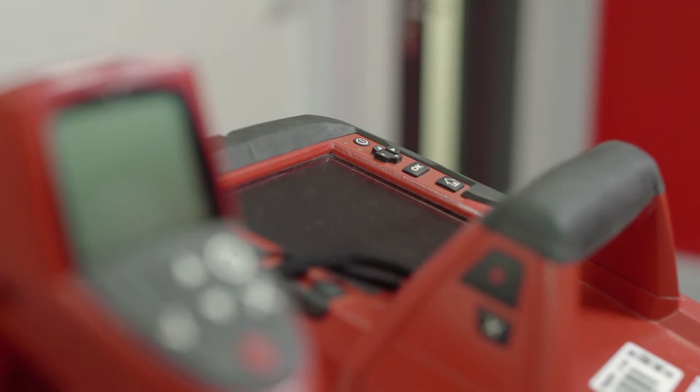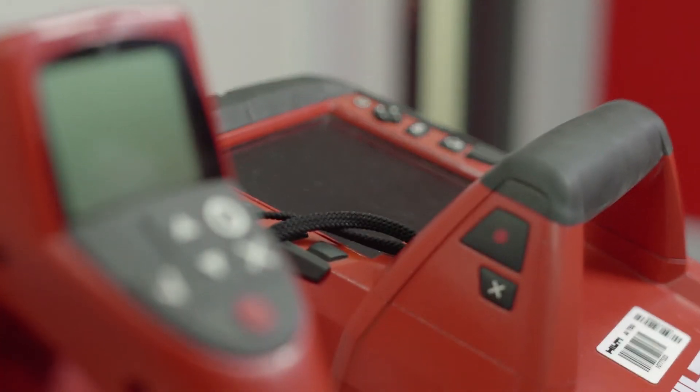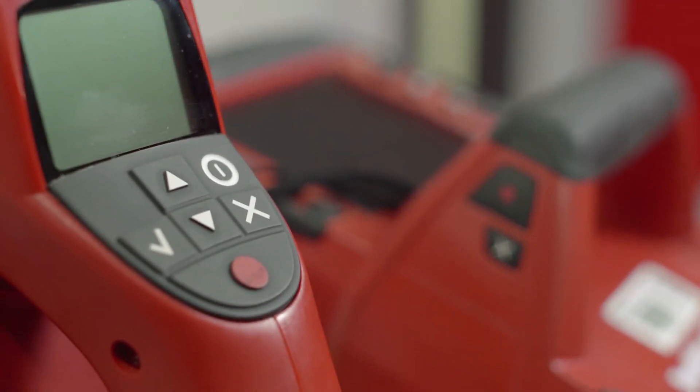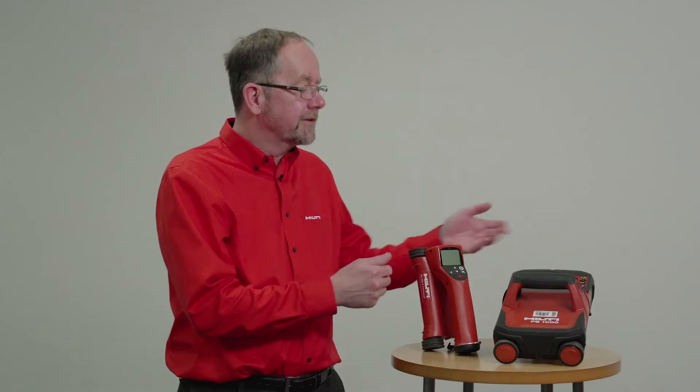Hilti PS detection systems can be divided into two technology types: electromagnetic detection, the Hilti PS 250 system, and ground positioning radar GPR, the Hilti PS 1000 system.